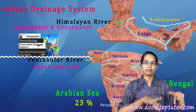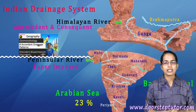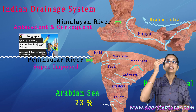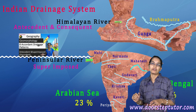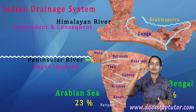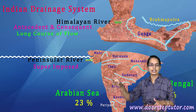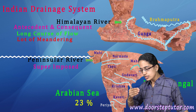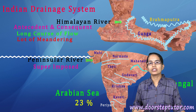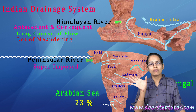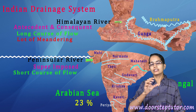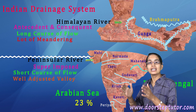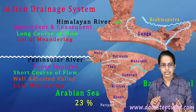Antecedent and superimposed drainage have been covered in a separate lecture. Regarding river flow, northern rivers have a longer course with a lot of meandering, whereas southern peninsular rivers have a shorter course, well-adjusted across valleys, with comparatively less meandering.